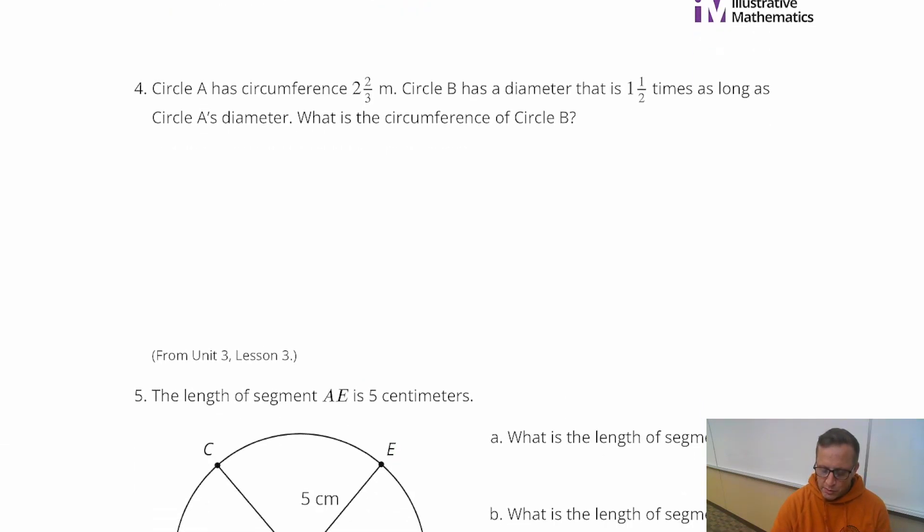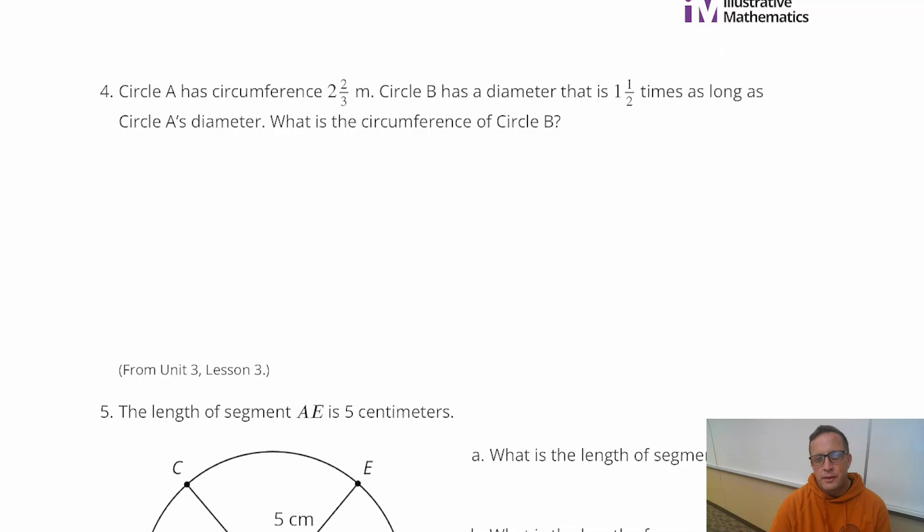Number four. We've got circle A has circumference 2 and 2 thirds meters. That's a nice number, fraction. Everyone loves fractions. 2 and 2 thirds meters. Circle B has a diameter that's 1 and 1 half times as long as circle A's diameter. So what's the circumference of B?